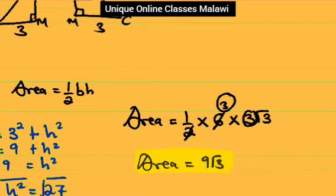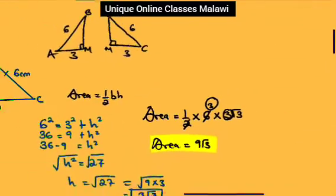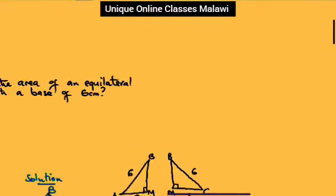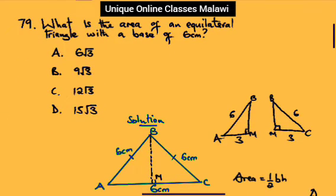So if you can go back to our options, the correct option here, that's 9 root 3, which is option B.